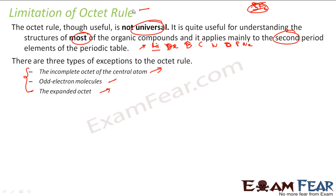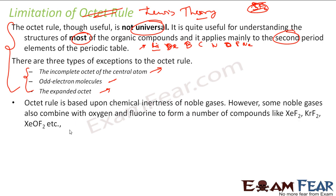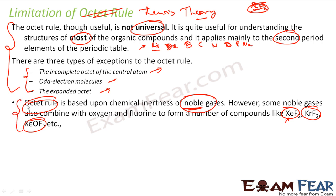The limitation of Lewis theory is the topic here. First, the octet rule itself — the basic foundation of Lewis theory — is not universally true. Also, the octet rule is based on the chemical inertness of noble gases. But we have seen that noble gases do form compounds like XeF2, KrF2, XeOF2. So the whole logic is incorrect — noble gases also react.